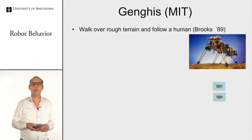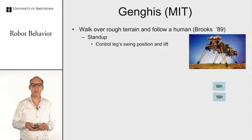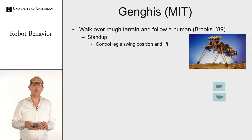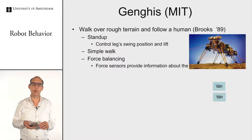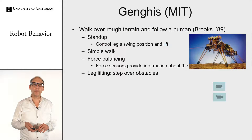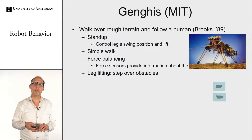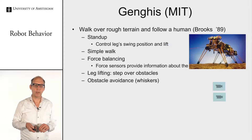A variety of robots have been programmed this way. One is Genghis — a caterpillar-like robot. It could control how it walked, handle simple terrain, navigate non-flat floors, balance itself, and if one of its feet was dangling over an obstacle, it could evade that obstacle. It also had whiskers in front to evade large boulders.